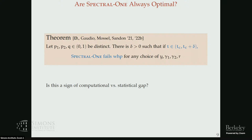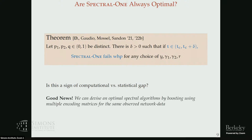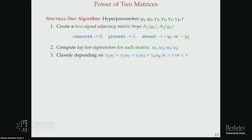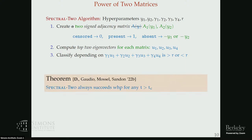You might think this signals a computational versus statistical gap, but the answer is no. There is good news: we can devise an optimal spectral algorithm by using multiple encoding matrices instead of a single one. On the same data, we use two encoding matrices, which gives us four top eigenvectors instead of two. We then take a linear combination and classify vertices as before. This class — Spectral-2 — always succeeds up to the information-theoretic threshold for any parameter setting.